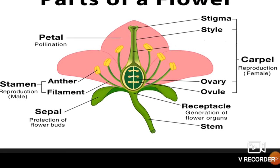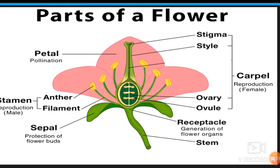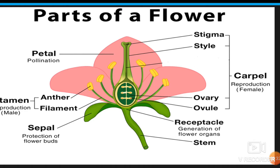Before discussing sexual reproduction in plants we need to know about flower parts. There are two types of parts in a flower: one is essential parts and another is non-essential parts. The parts which are used in sexual reproduction are known as essential parts, and the parts which are not directly used in sexual reproduction are known as non-essential parts. Even though non-essential parts are helpful in reproduction, if they are not present, reproduction will still take place.